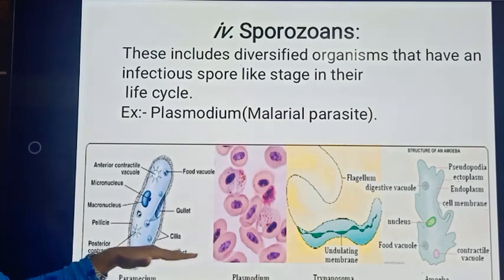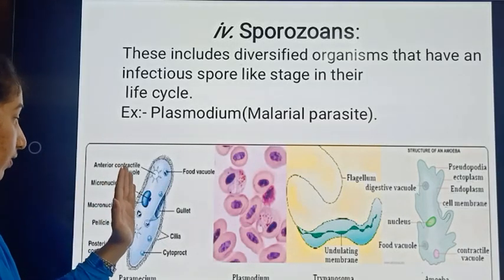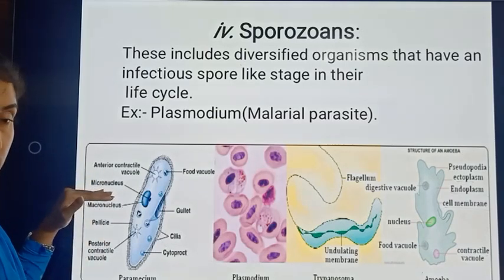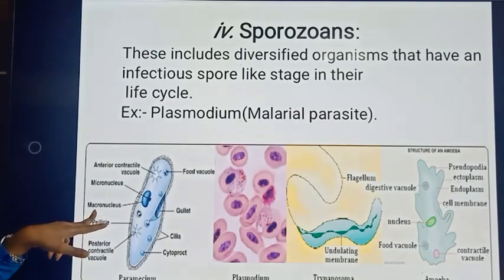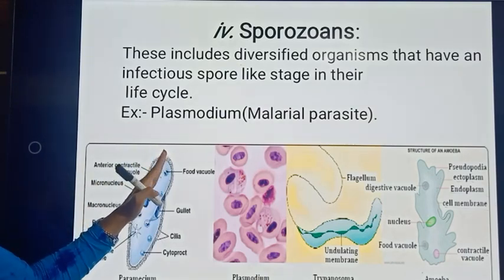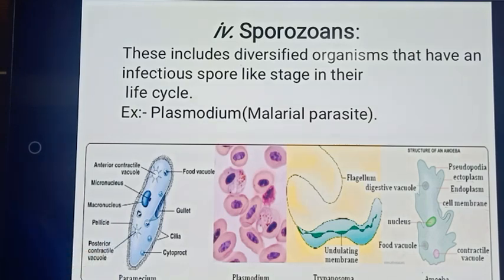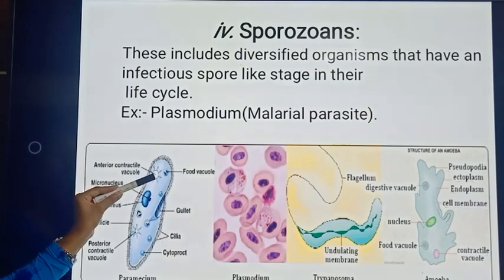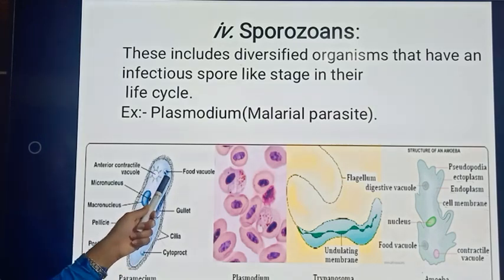Paramecium also has a macronucleus — a very large nucleus — and a micronucleus, a smaller one. There is also an anterior contractile vacuole present at the tip in the anterior position, and a posterior contractile vacuole at the end. These contractile vacuoles are present at both the anterior and posterior positions of the Paramecium.